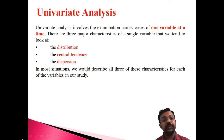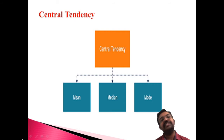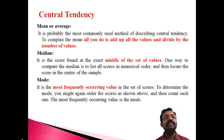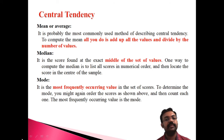The second category is central tendency. We are already familiar with central tendency — mean, median, and mode. The mean is the average: the sum total of all observations divided by the number of values. That is known as the mean.